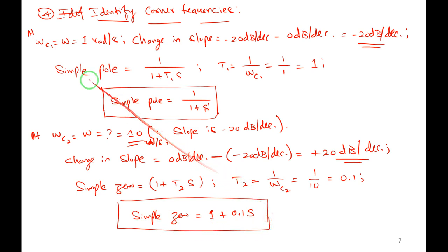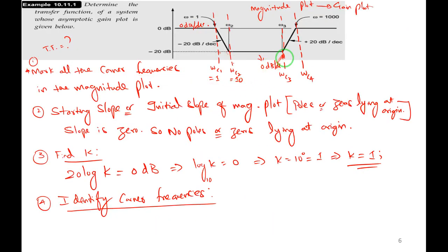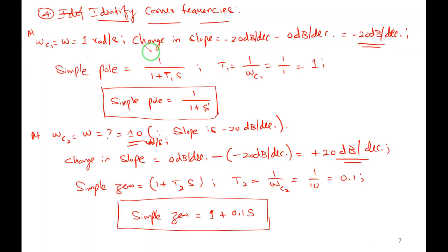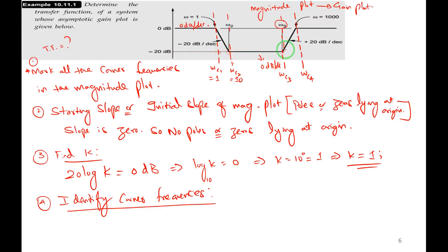Now we move to the next problem. The problem states: for the plot shown below, determine the transfer function. The slopes are given in dB per octave. We need to remember that 6 dB per octave equals 20 dB per decade. So 12 dB per octave equals 40 dB per decade, and −6 dB per octave equals −20 dB per decade.